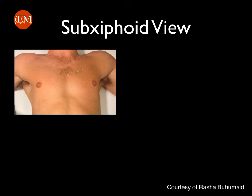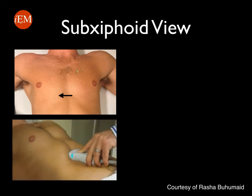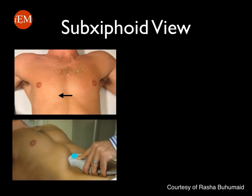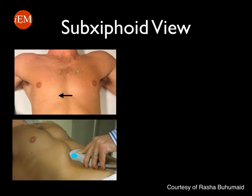First, the sub-xiphoid view. Your anatomical landmark for the sub-xiphoid view is the xiphoid process. You will place the probe just below the xiphoid process and the probe marker will be pointing towards the patient's right. Note that the sonographer is placing the probe very flat, angling it towards the liver to obtain this view.